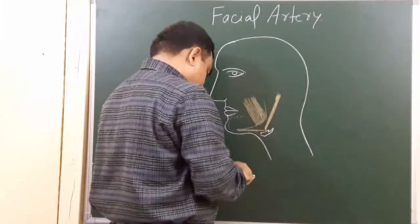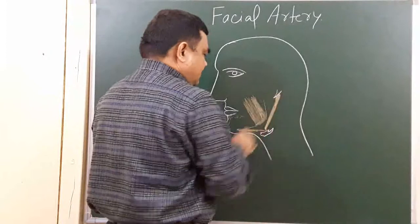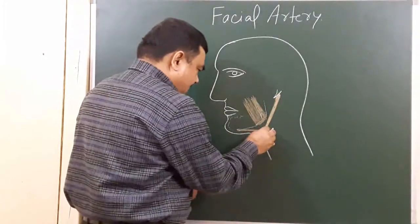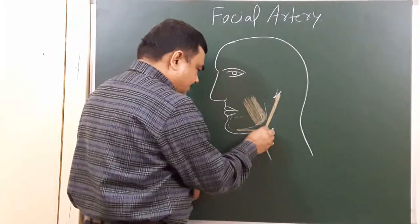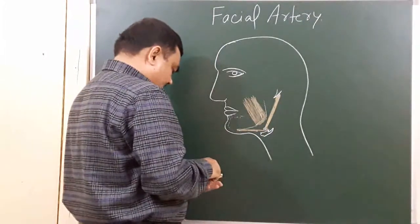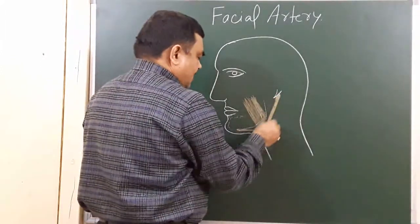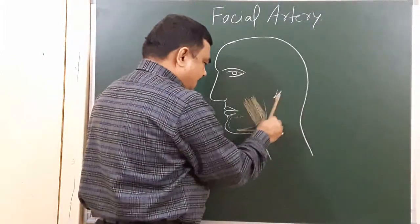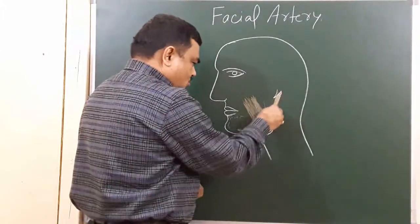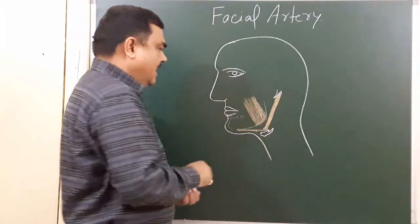The posterior belly of the digastric is attached to the styloid process — this is the styloid process. There is also a fibrous pulley here. Another muscle is the stylohyoid muscle. So here we have two muscles: the posterior belly of the digastric and the stylohyoid muscle.